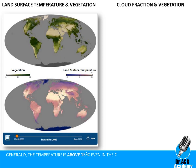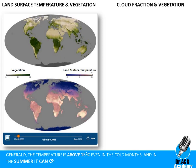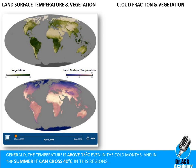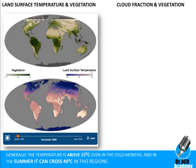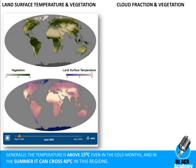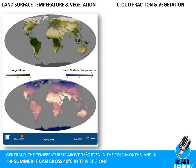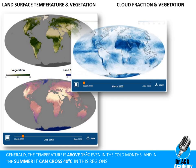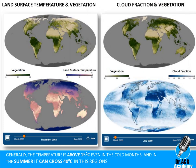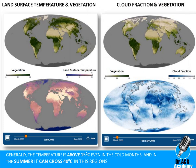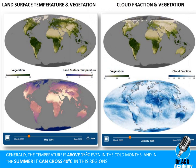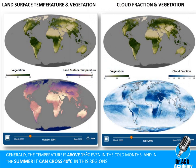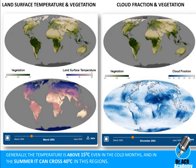Generally, the temperature is above 15 degrees Celsius even in the cold months, and in the summer it can cross 40 degrees Celsius in this region. Here in this video you can see land surface temperature and vegetation, and in this other video you can see cloud fraction and vegetation. High temperature and high precipitation supports the vegetation here.